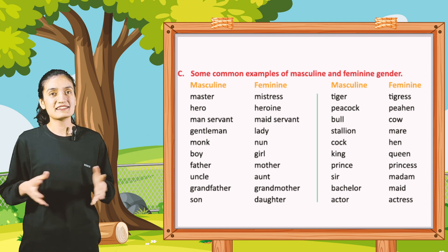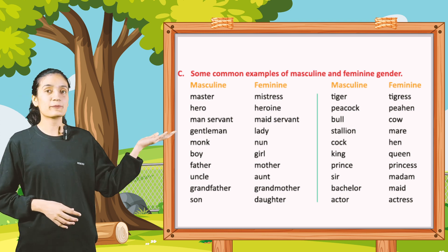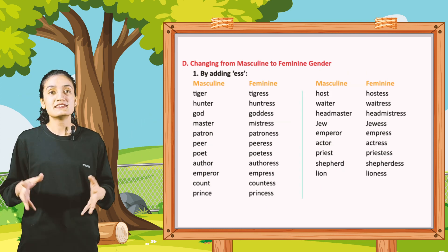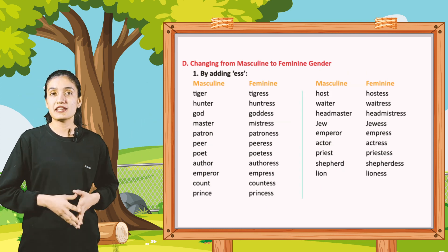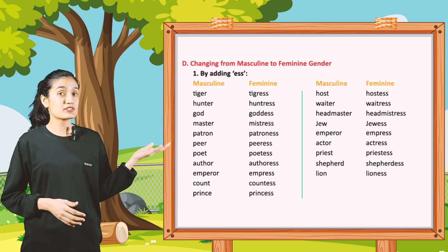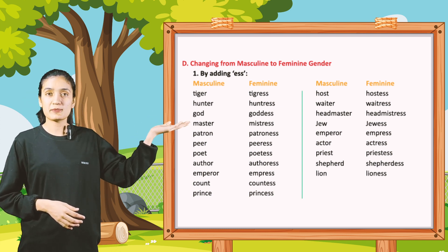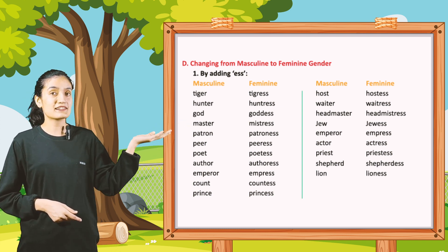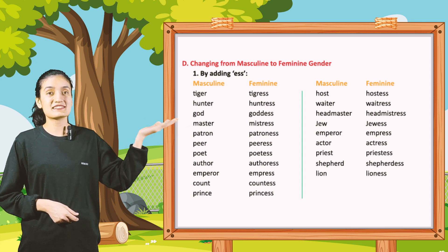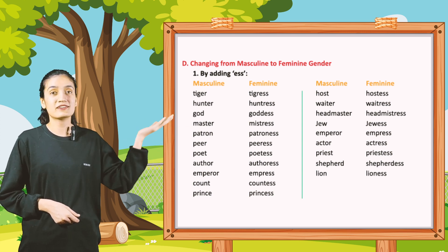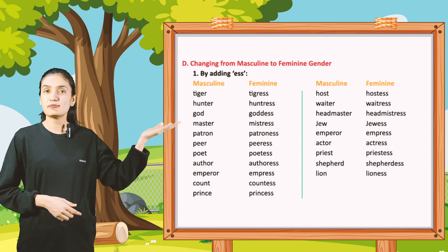Read these examples and understand. Now part D: changing from masculine to feminine gender. First, by adding -ess: tiger, tigress; hunter, huntress; god, goddess; master, mistress.